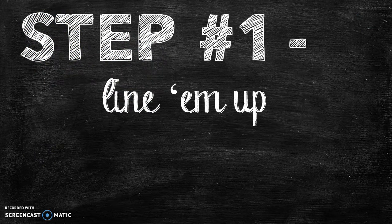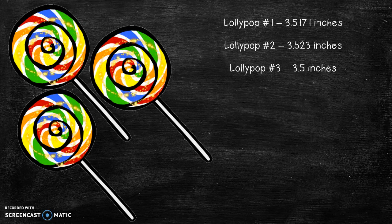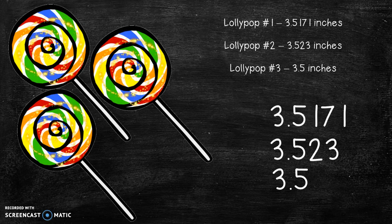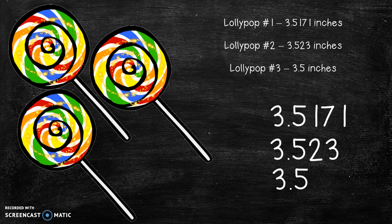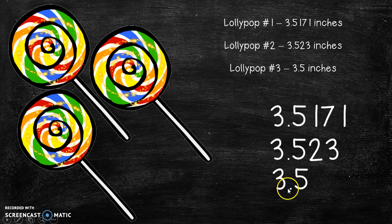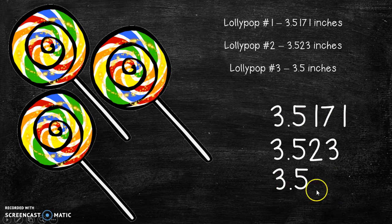So step number one, line them up. So here we have all three of our numbers and notice how the decimal point is all lined up. Okay, so yes this has more digits than this one does but it doesn't really matter as long as your decimal point is lined up.